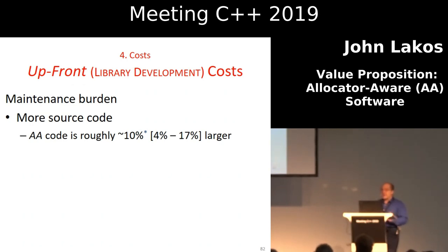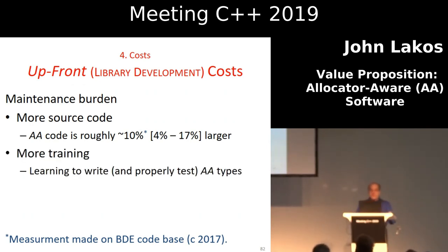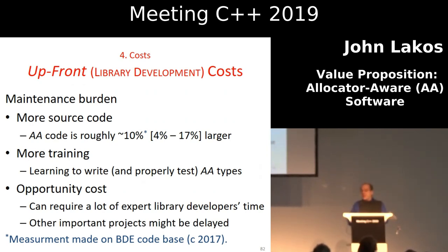How much more source code? We measured in 2017: roughly between 4 and 17%. I'm going to say 10% as a back-of-the-envelope figure — you have to write 10% more code if you want allocator-aware software. That's not nothing; that's 10%, an easy 10% compared to the rest of the stuff, it's boilerplate, but it's 10% more code. And then there's training — including not just how to write it, but how to test it and how not to screw it up. Whenever you're doing this work, you're not doing real business work, so there's an opportunity cost.